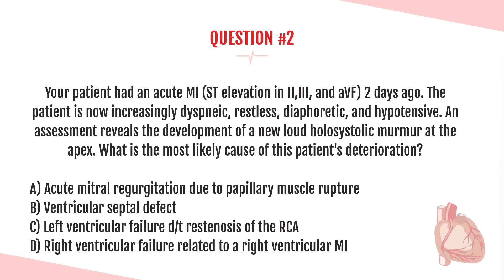Question number two. Your patient had an acute MI with ST elevation in leads 2, 3, and AVF two days ago. The patient is now increasingly dyspneic, restless, diaphoretic, and hypotensive. An assessment reveals the development of a new loud holosystolic murmur at the apex. What is the most likely cause of the patient's deterioration? A, acute mitral regurgitation due to papillary muscle rupture; B, ventricular septal defect; C, left ventricular failure due to re-stenosis of the RCA; or D, right ventricular failure related to a right ventricular MI?